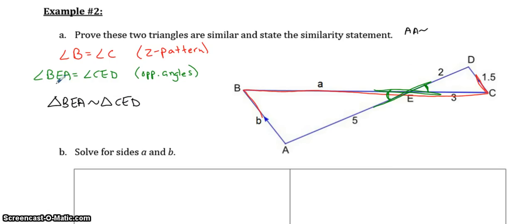You can get the right order of letters from up here, but remember B has to correspond to C, E to E, and A to D, and the reason is angle-angle similarity.